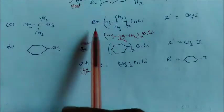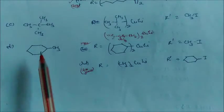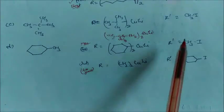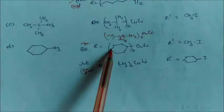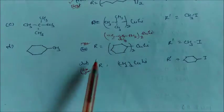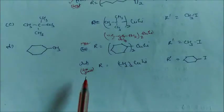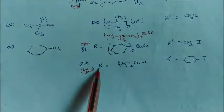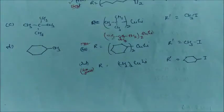To obtain the next target product, take R' as CH₃I (methyl iodide) and put the larger group in the Gilman's reagent — this gives maximum yield. Alternatively, using CH₃CH₂ in the Gilman's reagent gives very poor yield. So the choice of R' as methyl iodide gives maximum yield, while the other arrangement gives poor yield.